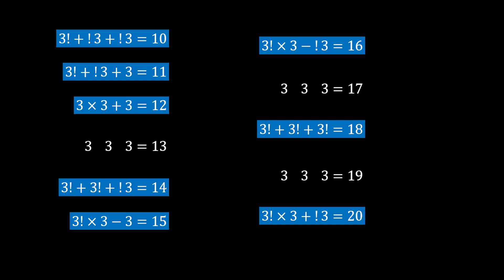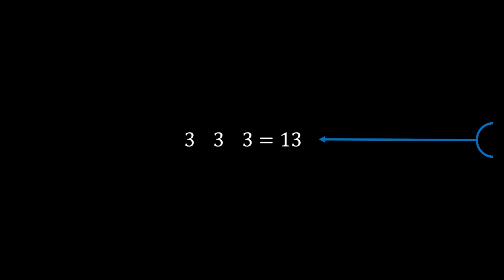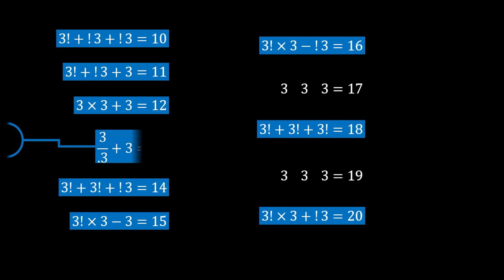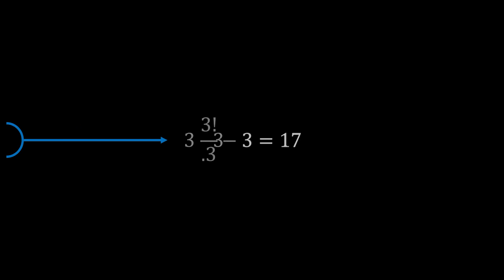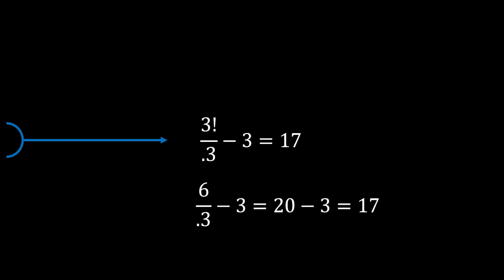For 13, we use decimal points for the first time: 3 / 0.3 + 3 = 10 + 3 = 13. For 17: 3! / 0.3 − 3 = 6 / 0.3 − 3 = 20 − 3 = 17.